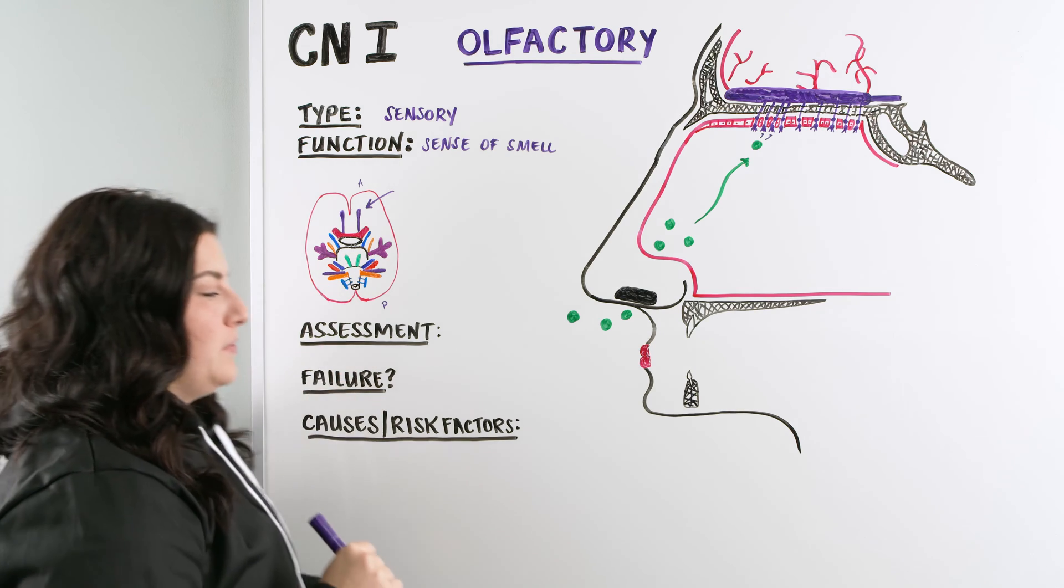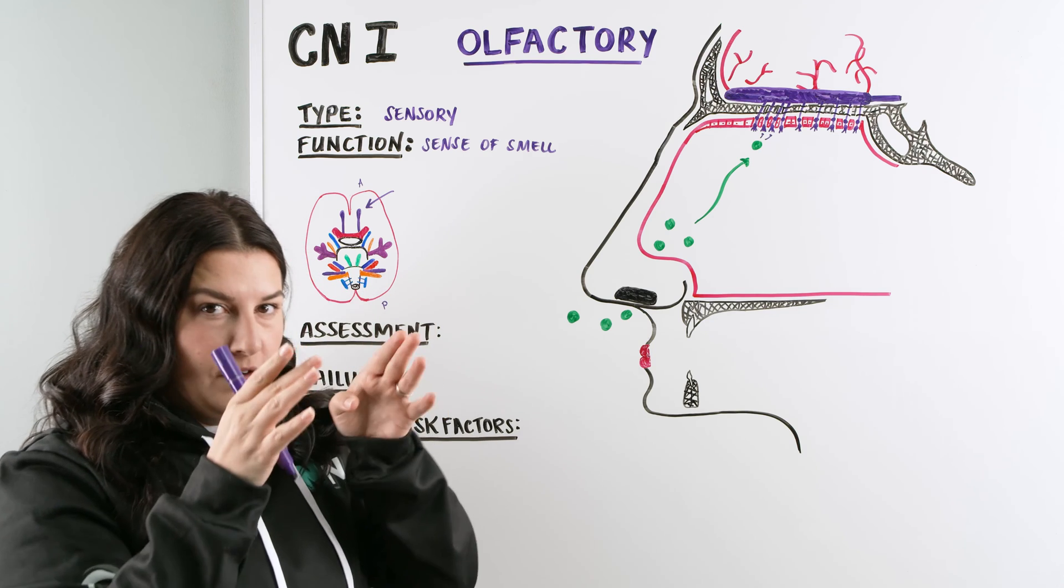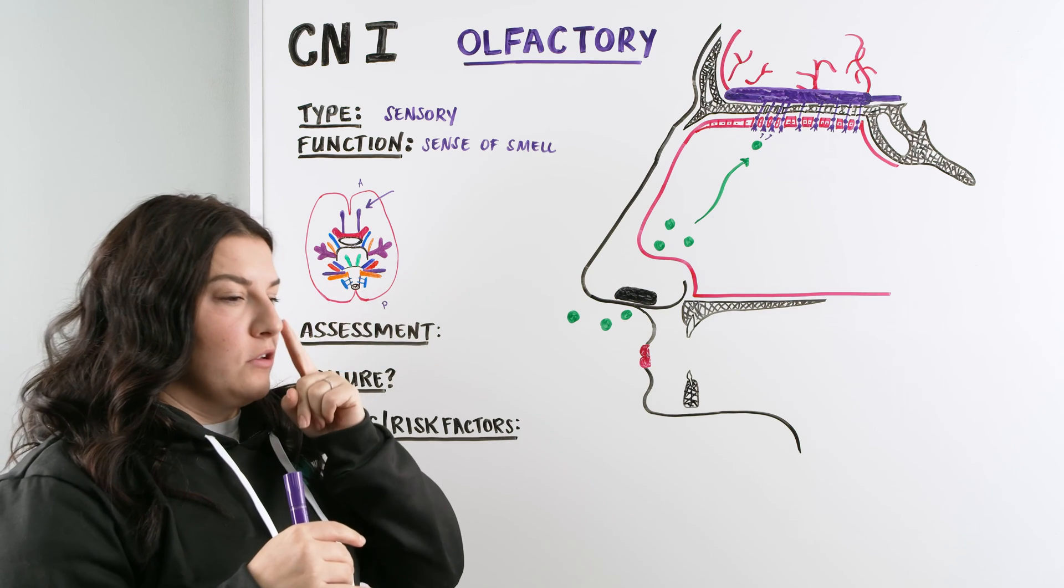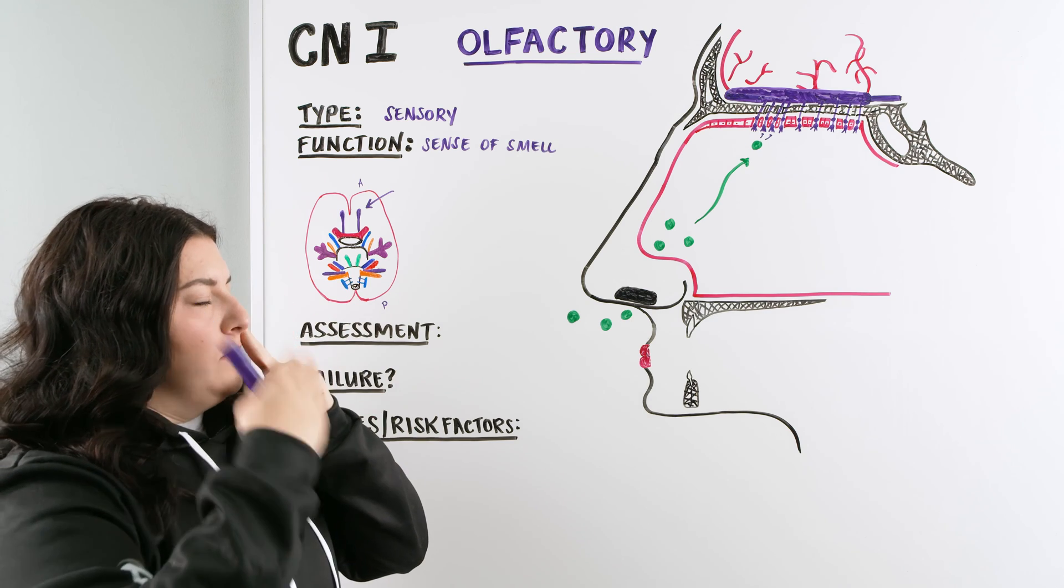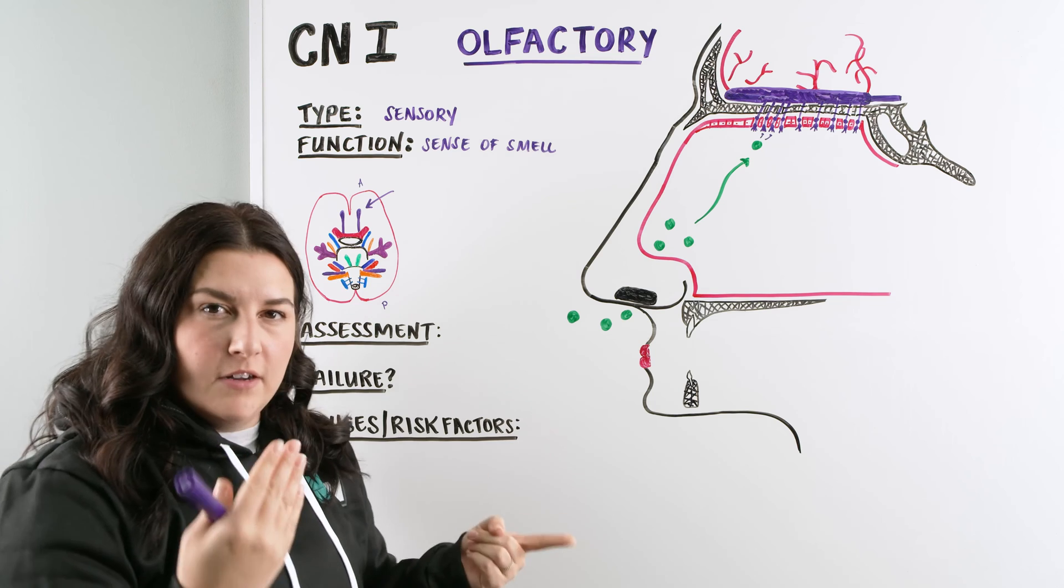And when you assess them, you're just going to have them occlude one nostril, because remember we have two olfactory nerves. So they're going to occlude one nostril, have them close their eyes so they don't cheat, and then have them take a whiff in, and they can identify the scent.